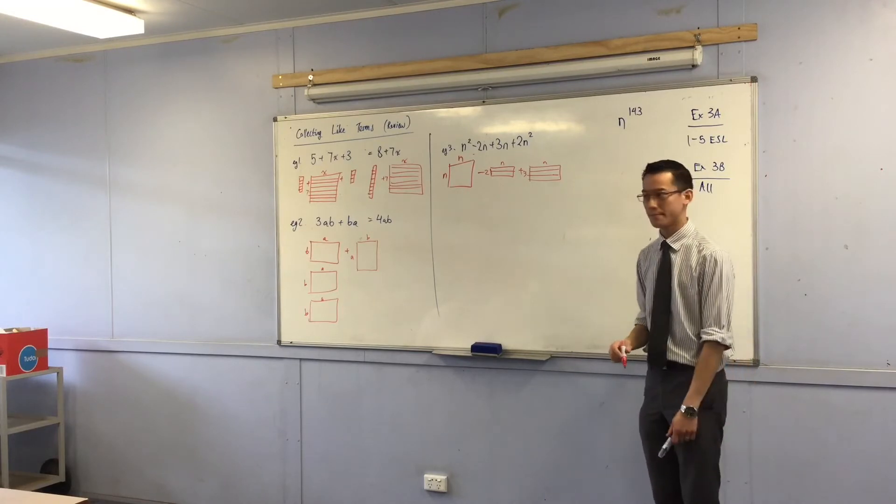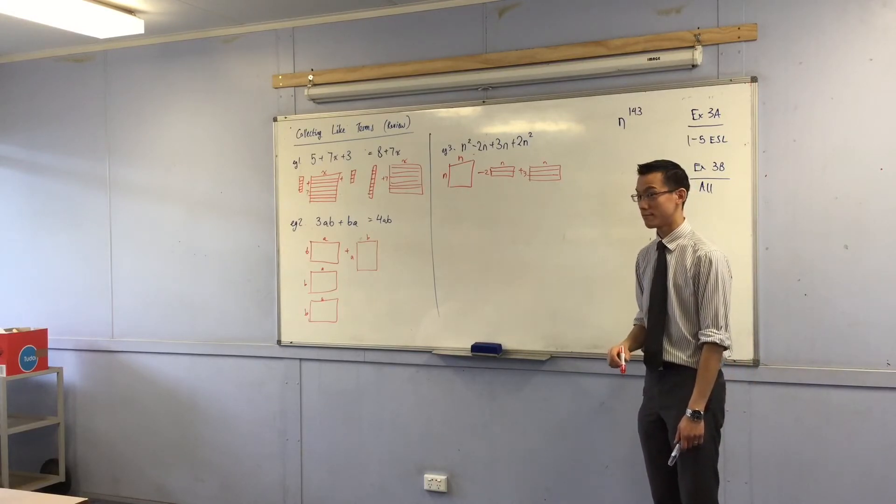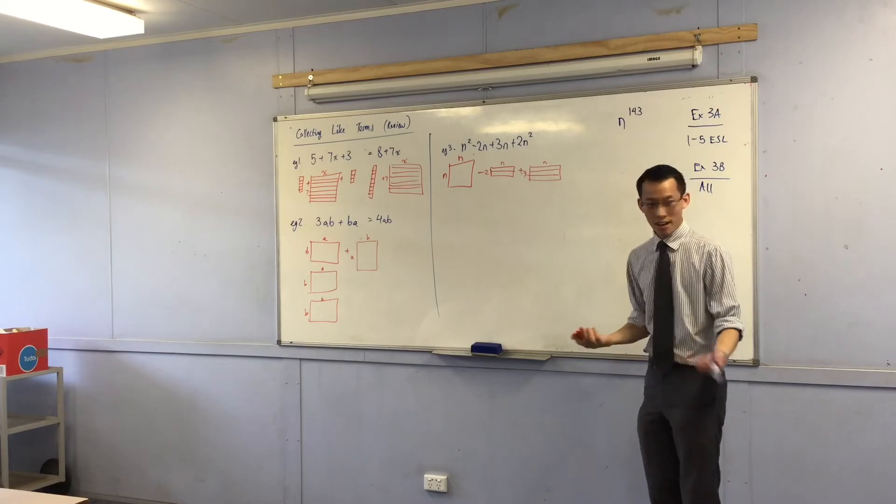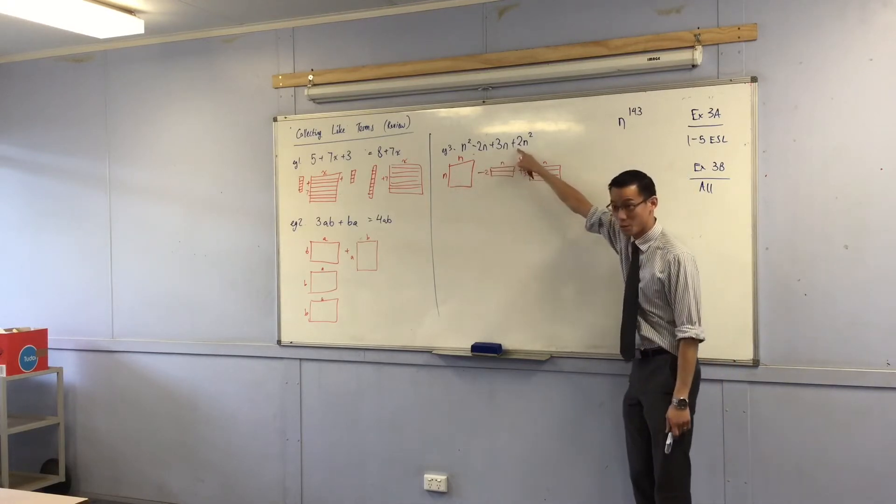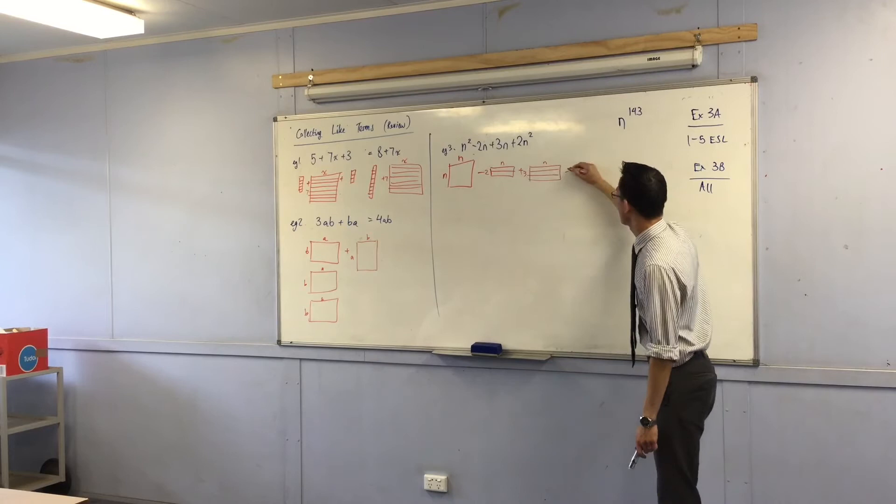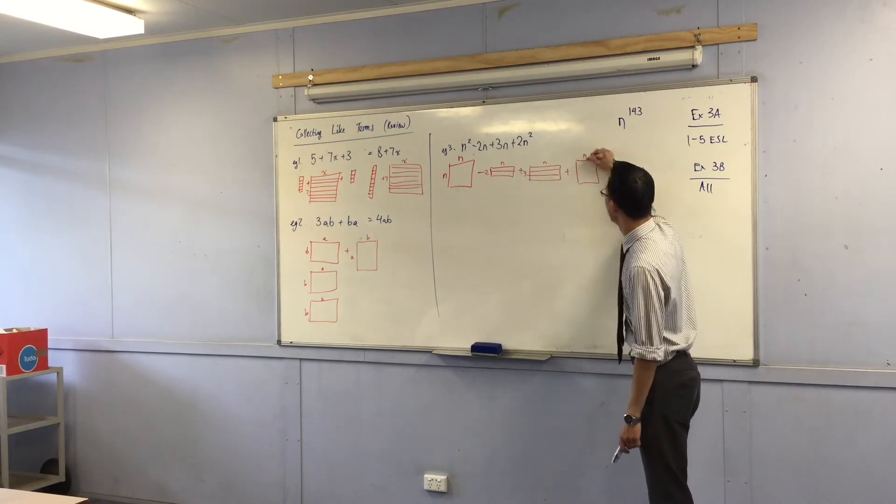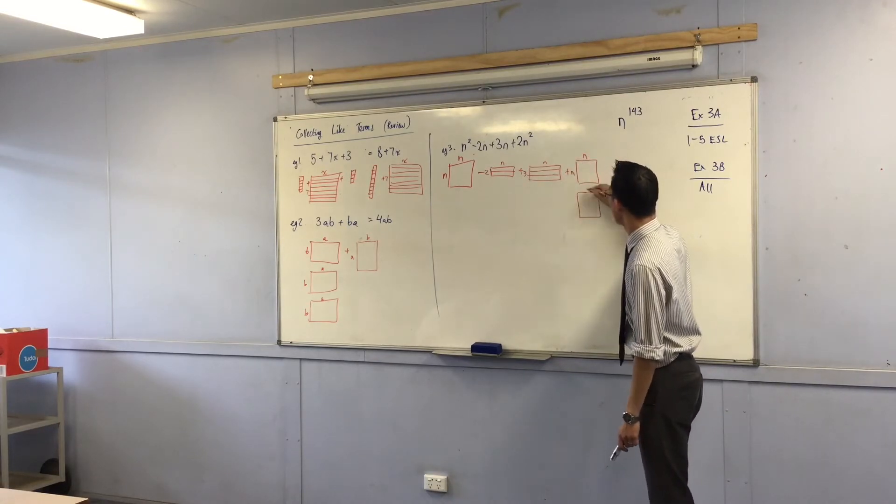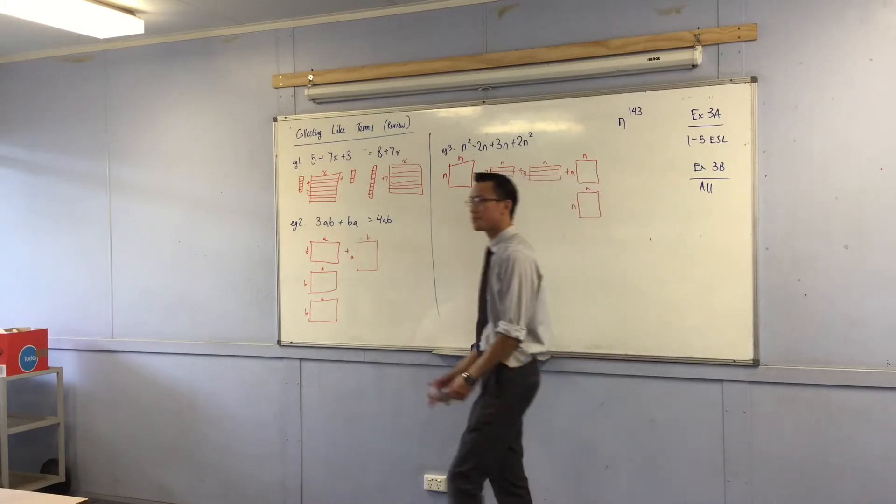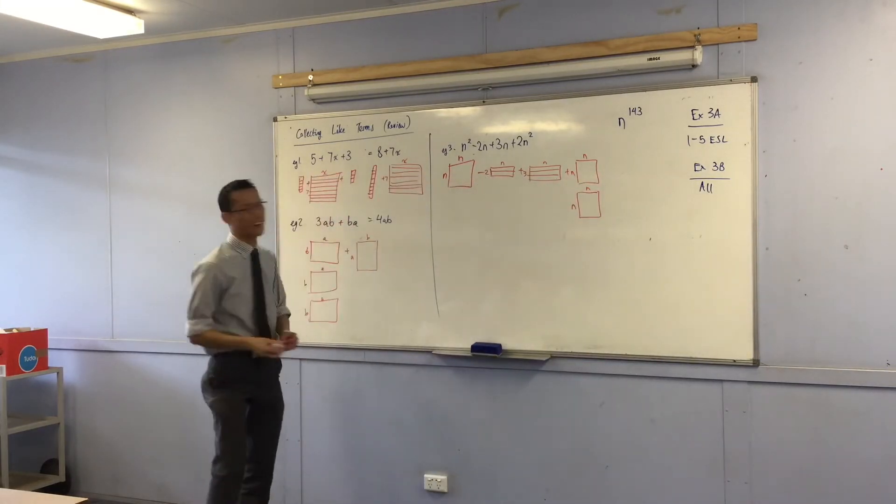Last one, what do you want me to put on? I'm just going to do two more squares because it says 2n squared. You with me? So I'm just going to do one here and another one here.